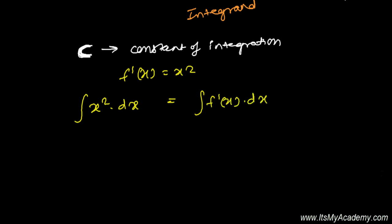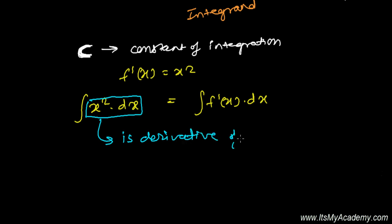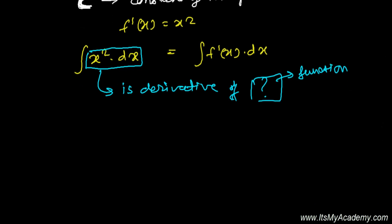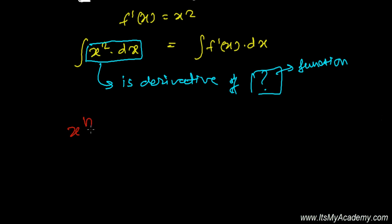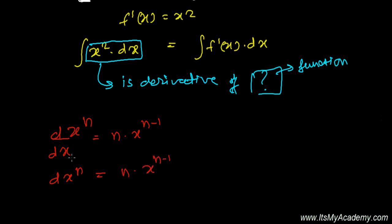To find the integration of x squared, we need to ask: x squared dx is the derivative of what function? We need to find that function whose derivative is x squared. From the power rule, if it is x to the power n and you differentiate with respect to x, you get n times x to the power n minus 1. So I'm writing the derivative of x to the power n equals n times x to the power n minus 1, and shifting dx to the right side.